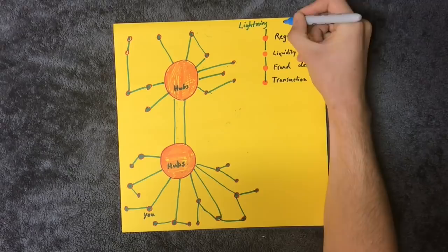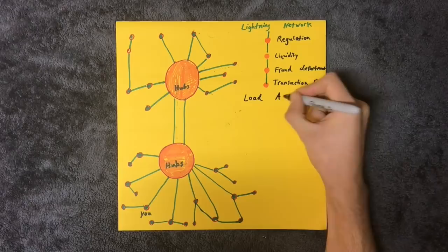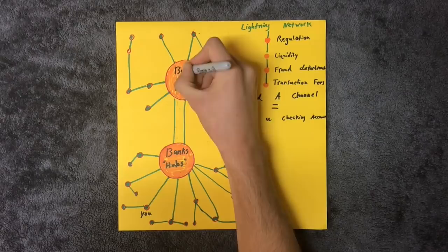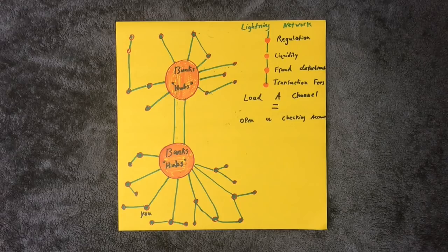Just replace the term open channel with checking account. These Lightning Network Hubs will be run by the same financial institutions that Bitcoin was made to challenge. The banks aren't fighting Bitcoin, because Bitcoin will be the new banking system.